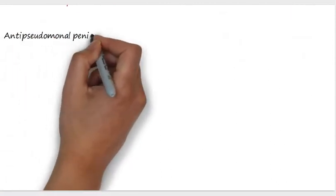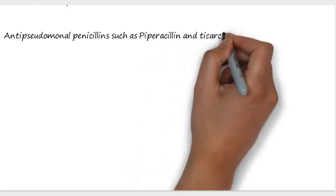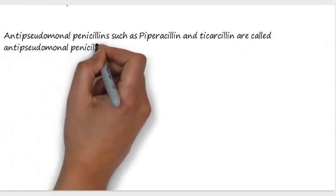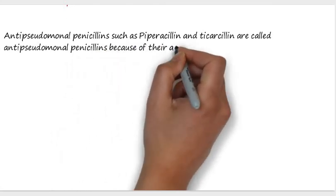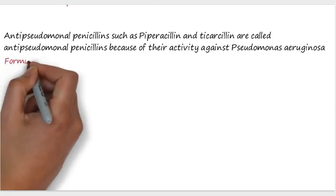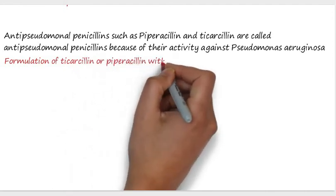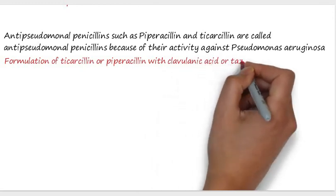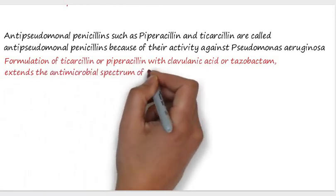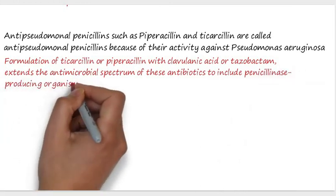Anti-pseudomonal penicillins such as piperacillin and ticarcillin are called anti-pseudomonal penicillins because of their activity against Pseudomonas aeruginosa. Formulations combining piperacillin or ticarcillin with clavulanic acid or tazobactam extend the antimicrobial spectrum of these antibiotics to include penicillinase-producing organisms.